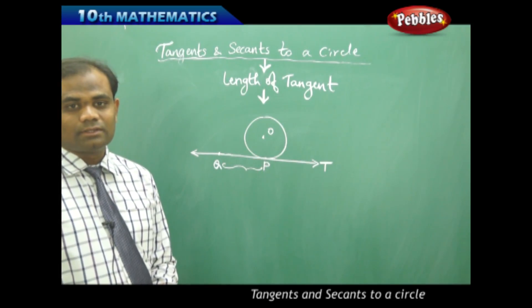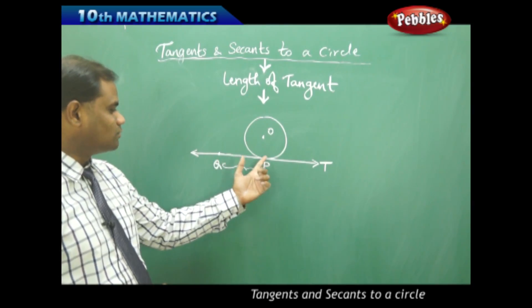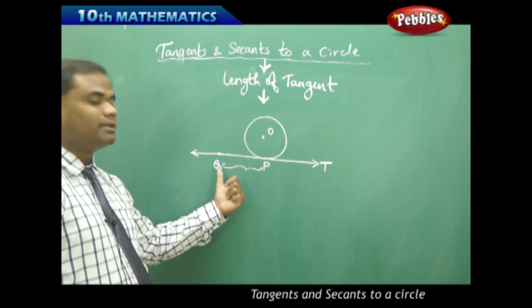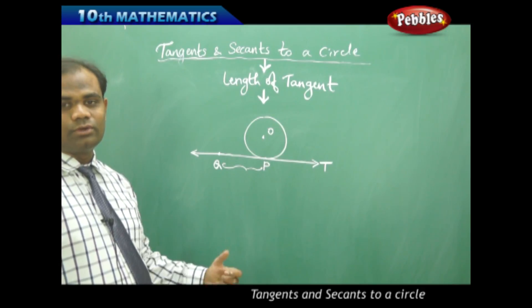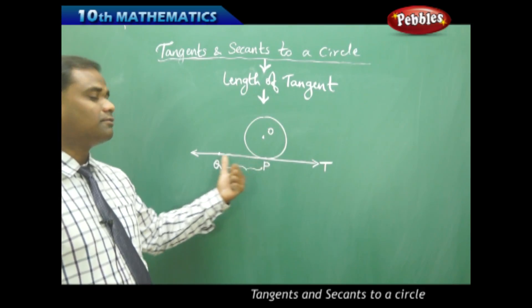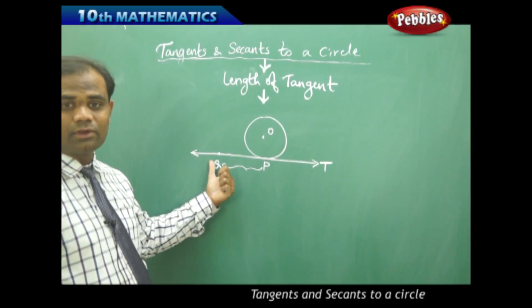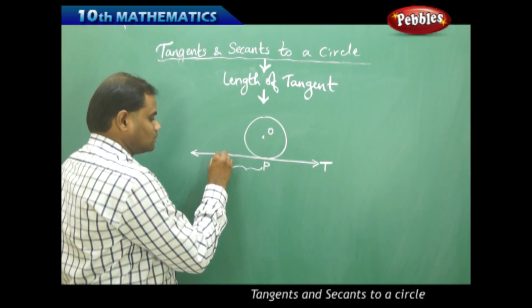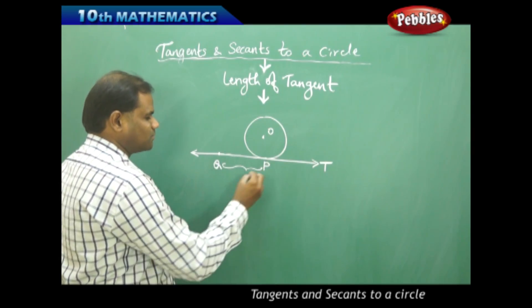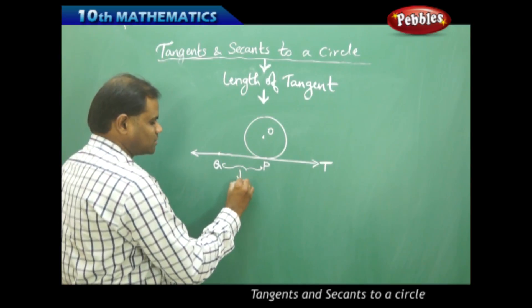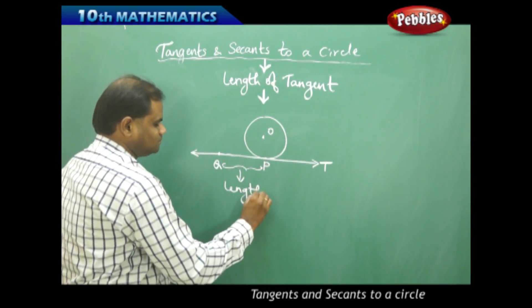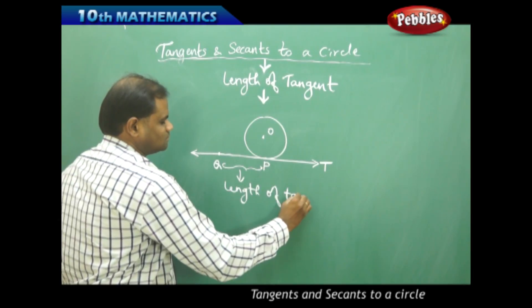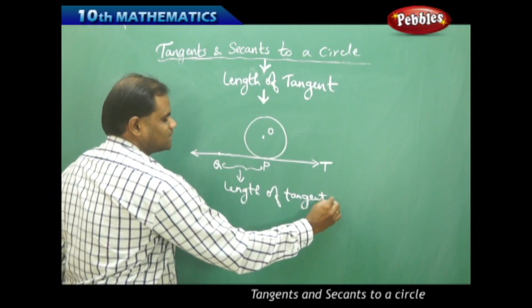That is, the length is referred as the distance of the point of contact from the desired point. So if Q is any point outside of the tangent or outside of the point of contact, then we have to find the distance between P and Q which is called the length of tangent.